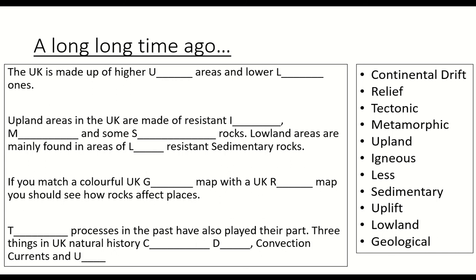The UK is made up of higher upland areas and lower lowland ones. Upland areas in the UK are made of resistant igneous, metamorphic and some sedimentary rocks - I probably could have put older sedimentary rocks there. Lowland areas are mainly found in areas of less resistant sedimentary rocks. If you match a colourful UK geology map with a UK relief map you should see how rocks affect places. Tectonic processes in the past have also played their part - three things in UK natural history: continental drift, convection currents and uplift. That final paragraph is quite important and we're going to look at that in more depth now.